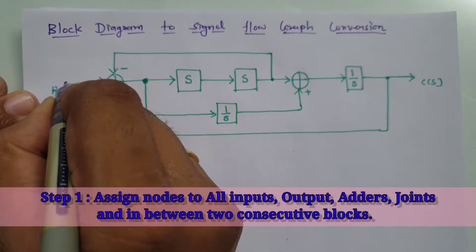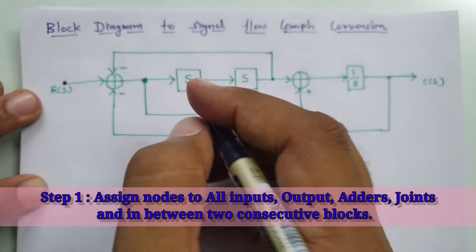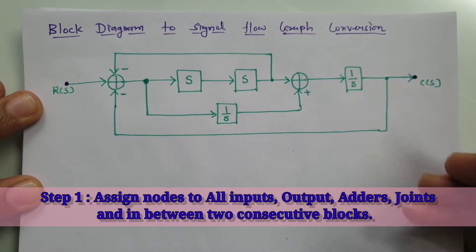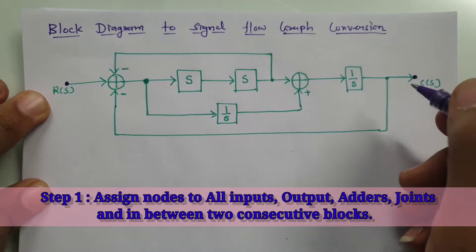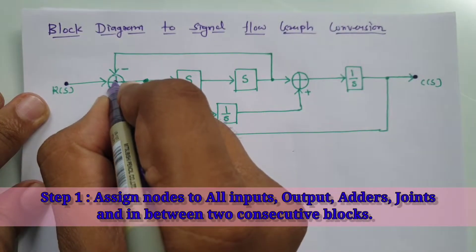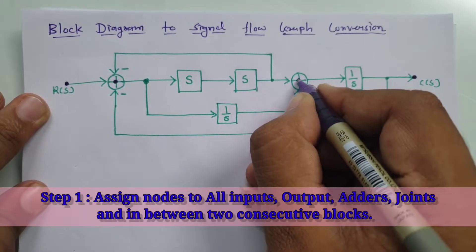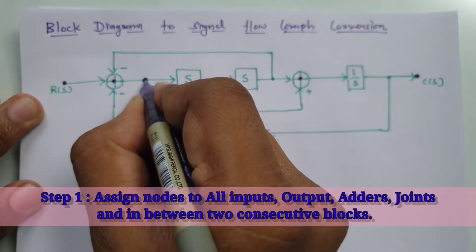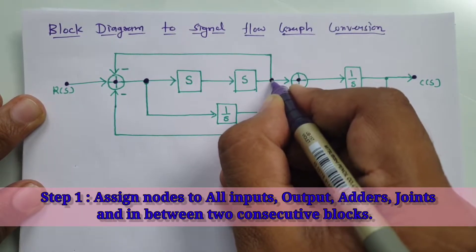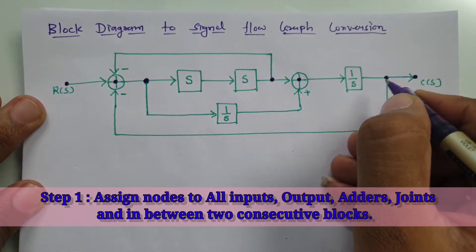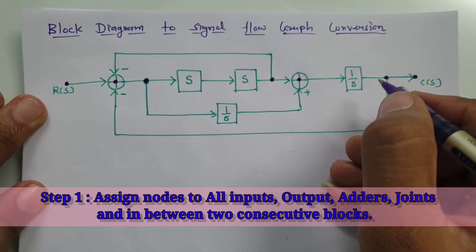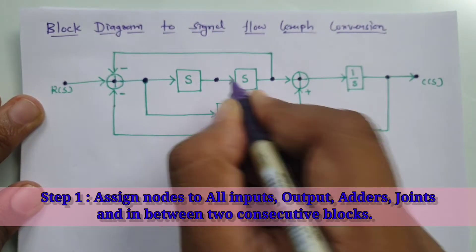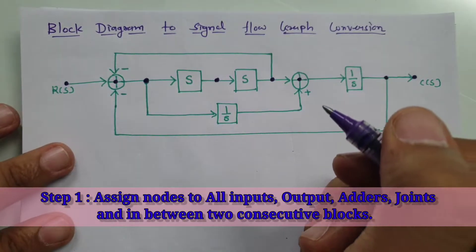We have one input, so here I'm assigning a node. For all the outputs, we have one output, so here I'm assigning a node. Then to all adders — with this adder I'm assigning a node, and with this adder I'm assigning another node. To all the joints: here we have a joint, so I'm assigning nodes here and here. And in between two consecutive blocks, here I'm assigning a node. That is how we need to assign nodes.